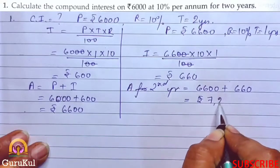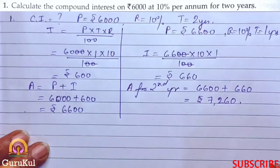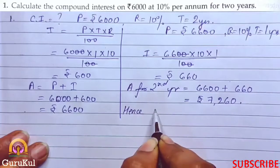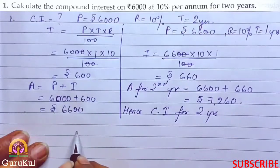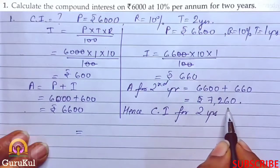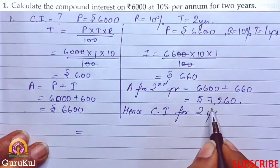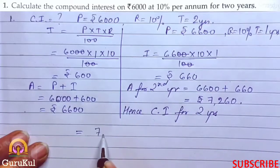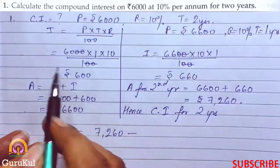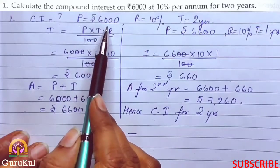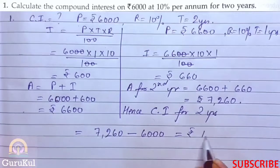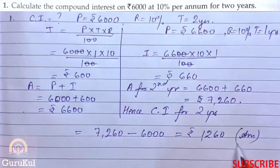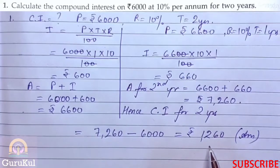Now amount for second year is 6600 plus 660, that gives us the amount of ₹7260. Hence, compound interest for 2 years is equal to the amount at the end of second year, that is 7260, minus the original principle which is ₹6000. That gives us ₹1260. So this is our answer, the compound interest for the term of 2 years.